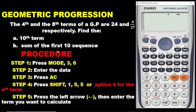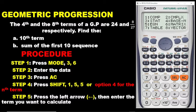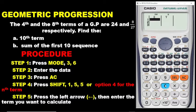We want to use the procedure listed on the left-hand side of your screen. Step 1: you press MODE, then you press number 3 and then number 6. So you press MODE, then number 3, then number 6. We now have number 6 displayed here on this interface.